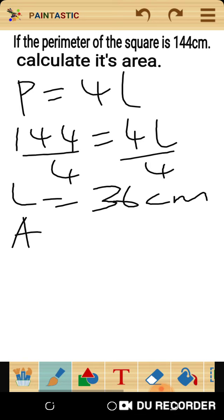To calculate area, A equals L squared. Area equals 36 squared.